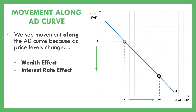Another explanation is the interest rate effect. Instead of spending that extra money, you save it. As that money goes into a bank, banks have more money to loan out, which drives interest rates down and increases investment. Since investment is part of our GDP equation, that increases real GDP. So as price levels drop and you save some of that extra money, it drives interest rates down, which increases investment and raises real GDP.